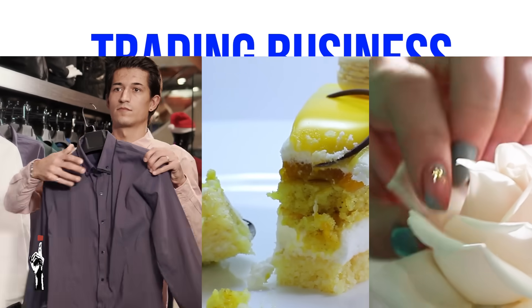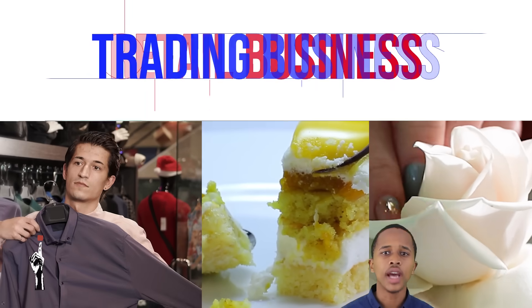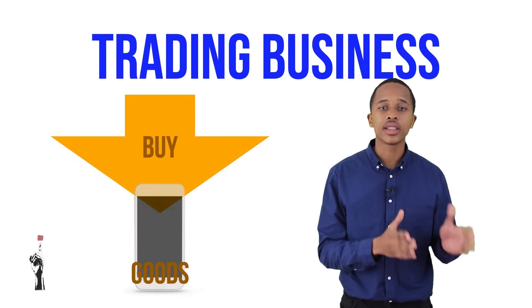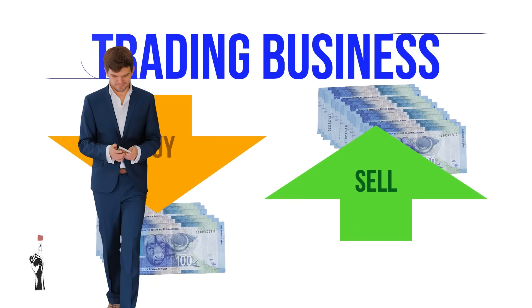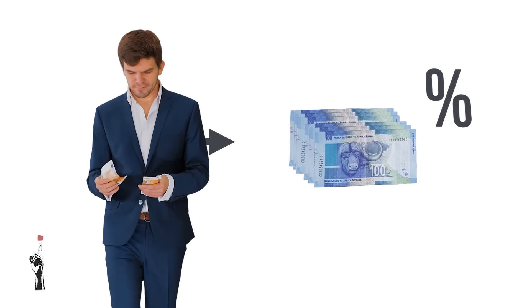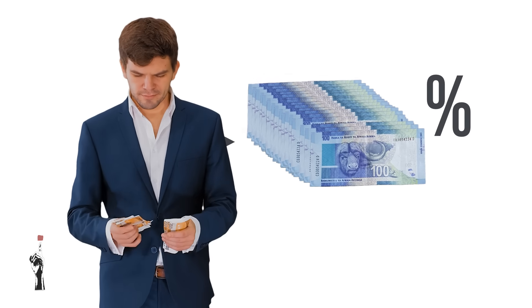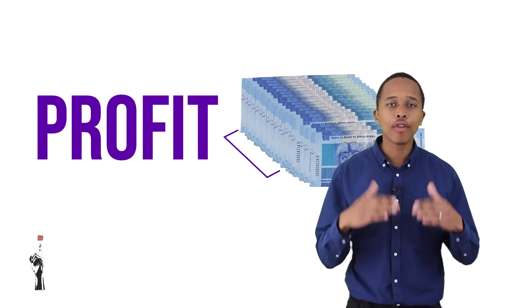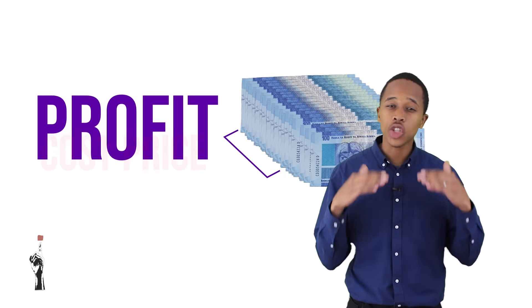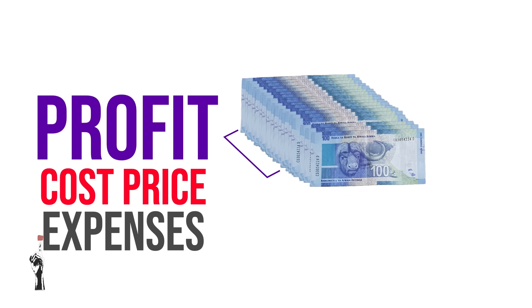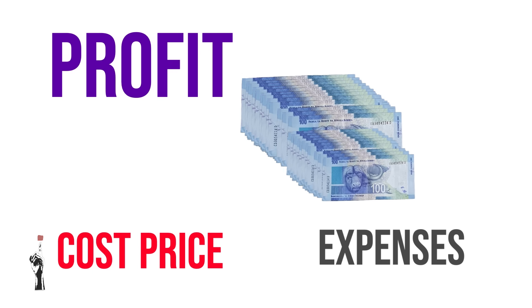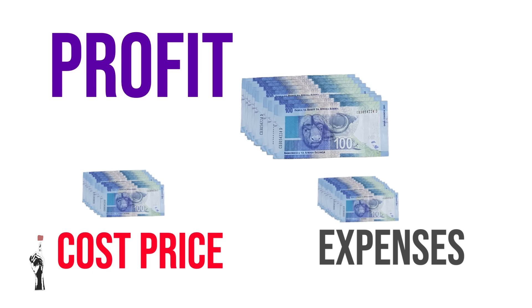Another name for a trading business is a retail business. A trading business buys goods at a certain price and sells them at a higher price. The owner decides before the time what profit percentage he or she would like to earn. The profit earned must be enough to cover all the costs, such as the cost price, and to pay all the other necessary expenses. The amount remaining after deducting the expenses and the cost price is the profit.